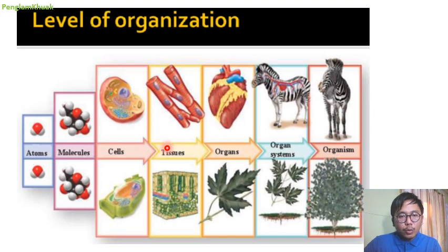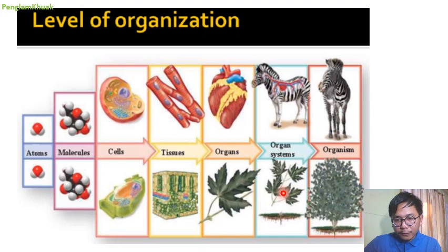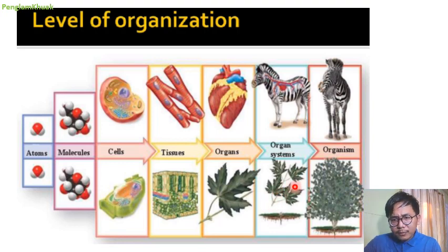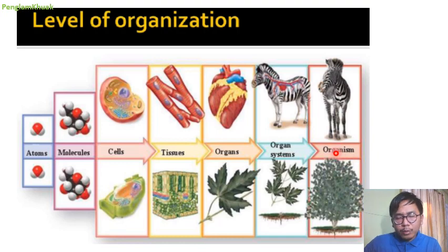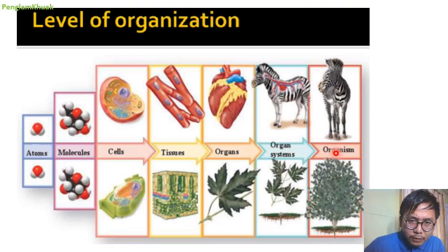Tissue are groups of cells which perform the same function. Groups of organs combine together to form an organism — or in the case of plants, the different parts of the plant. An organ system combines together to form an organism. Organisms in turn form a population, and groups of populations form an ecosystem, and groups of ecosystems combine together to form the biosphere.